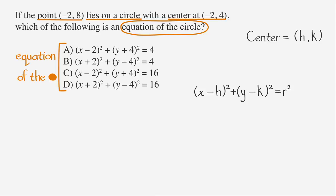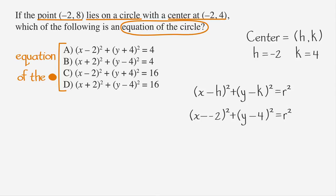Let's start by writing down the equation to help us avoid careless mistakes, and remind ourselves that the center is (h, k). We know the center of the circle is at (negative two, four), so we have x minus negative two squared plus y minus four squared equals r squared. Minus negative two equals positive two, so we have x plus two squared plus y minus four squared equals r squared. Looking at the answer choices, a and c both say x minus two, not x plus two, so we can cross off two answer choices.